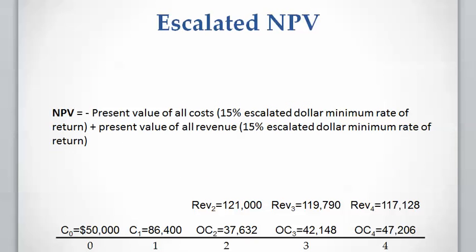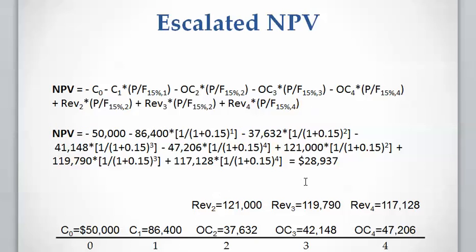For NPV, we take the present value of all costs — applying the negative sign — plus the present value of revenue, both discounted at the 15% escalated dollar minimum rate of return. We calculate NPV as $28,937. Because this NPV is positive, we can conclude that this project is economically satisfactory.